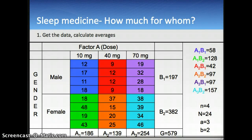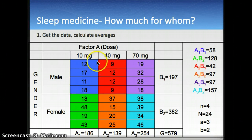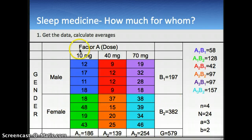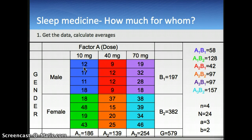Here is an example of a two-way ANOVA. The question is: how much sleep medicine should we give, and for whom? We have factor A (dose): 10 milligrams, 40 milligrams, or 70 milligrams, and factor B (gender): male and female. In each cell we see how many minutes it took people to fall asleep.